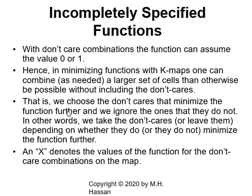Incompletely specified functions are functions where, basically, we do not care. With certain input combinations, the function output will never take place, so we don't care about the value of the output. The value of the output could be assigned to zero or assigned to one — we call it a don't care condition. In minimizing functions with K-map, one can combine a larger set of cells than would otherwise be possible. We choose the don't cares that minimize the function further, and we ignore the ones that do not. X denotes the values of the function for the don't care combinations on the map.